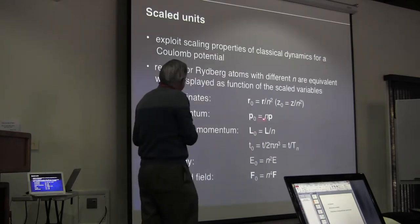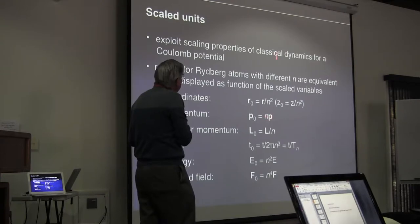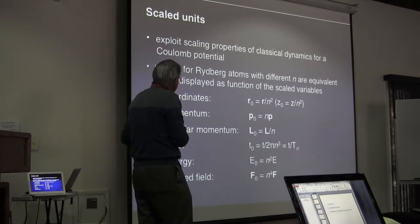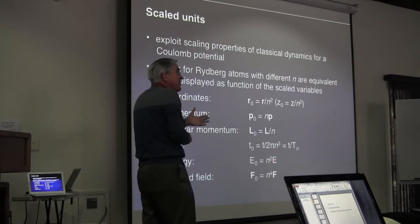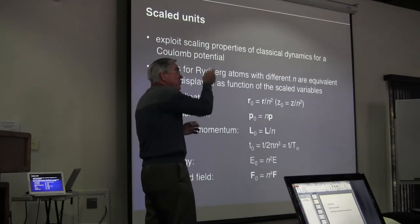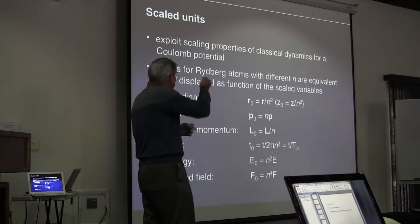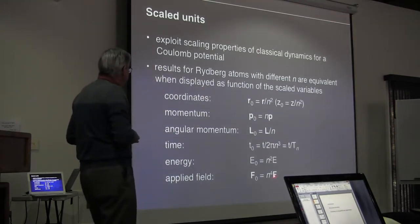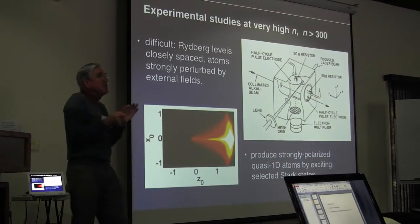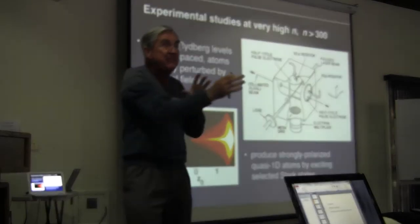The scaled coordinate r₀ is simply the coordinate divided by n squared — since the size of a Rydberg atom scales as n squared, all Rydberg atoms have a scaled size of one. The scaled momentum is multiplied by n and becomes the same for all states. Angular momentum goes as l over n. Time period is t over 2π n cubed — the classical orbital period. Energy goes as n squared times E; since energy goes as 1 over n squared, in scaled units all Rydberg atom energies are one half. The applied fields are scaled by n to the fourth. Scaled units are very valuable when comparing properties of atoms in different Rydberg states.